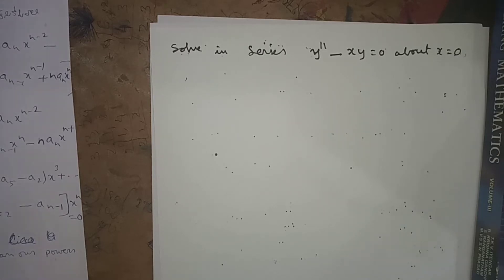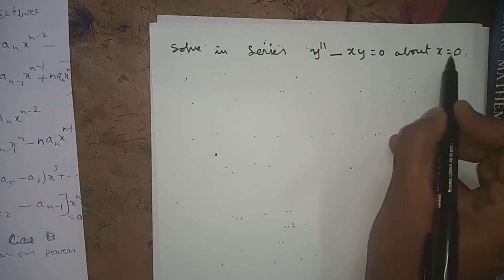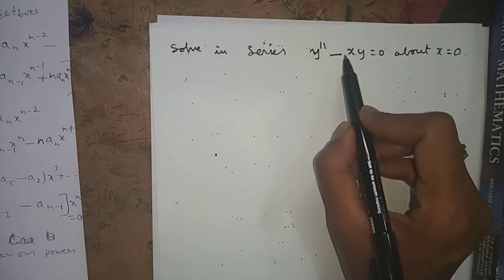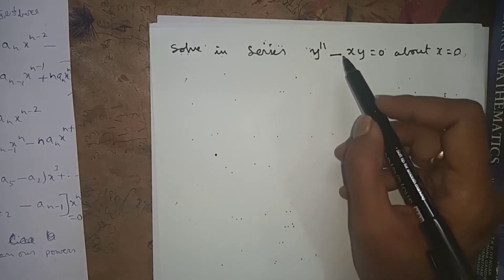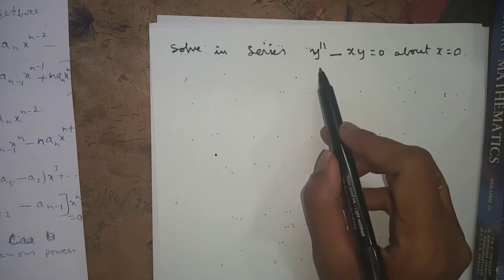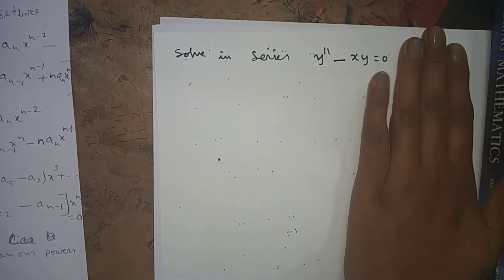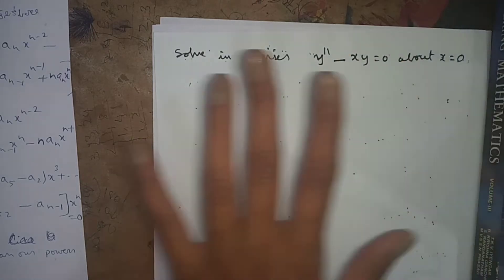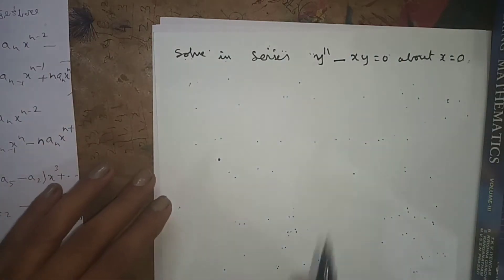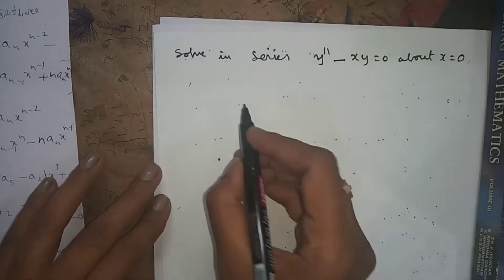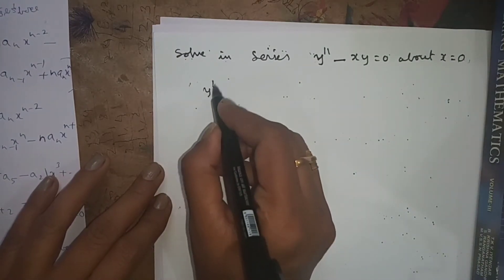The next problem is: solve in series y double dash minus x times y equals 0, about x equals 0. This is a power series problem. Here, x equals 0 is the ordinary point of this equation. Sometimes they won't specify x equals 0, so by default you take x equals 0 and find the power series solution.